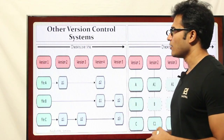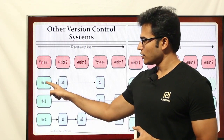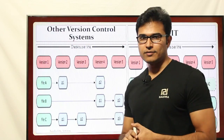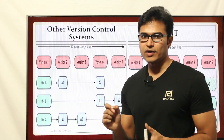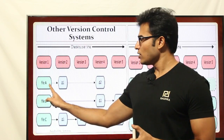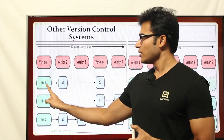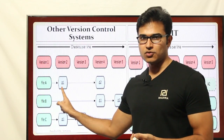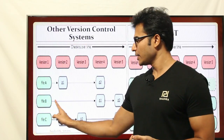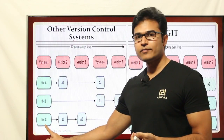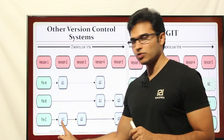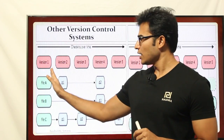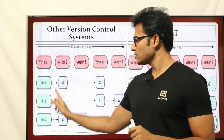If you look at other version control systems, in Version 1 whatever initial files you have created are all going to be there. In Version 2, if you have not created any new file and are only making some modifications to existing files, then it will take only the changes and store them. For File 1, if you made some modifications, only those changes will be stored in Version 2. If File B had no changes, nothing will be stored. For File C, if you made modifications, only the changes will be noted.